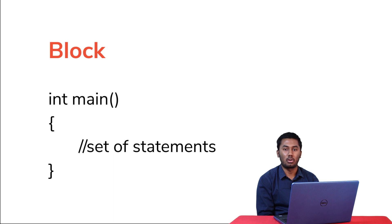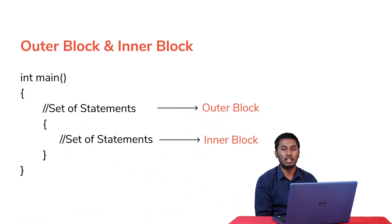First, let's look at the local scope of a variable. Local scope is also called block scope. A block begins with an opening brace and ends with a closing brace. A block can contain another block within it. The variables of the outer block are accessible in the inner block, but variables in the inner block are not accessible in the outer block. The scope and lifetime of local variables is only within the block in which they are defined. Local variables are not automatically initialized by the compiler.